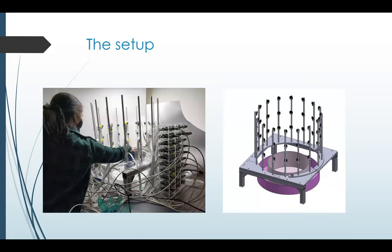To answer these questions, we built a setup made of 48 fixed cameras arranged in a semi-circular shape around the central construction area. There are three levels of cameras, allowing 3D reconstruction. We take snapshots every 10 seconds — fast enough to track the leaf dynamics and the ants, while still keeping the data manageable.